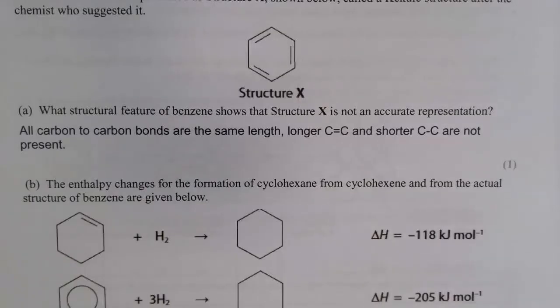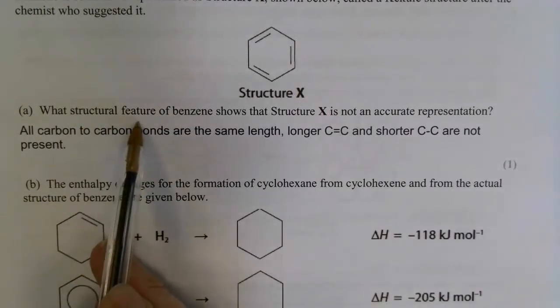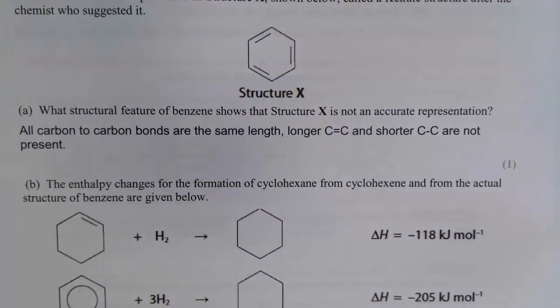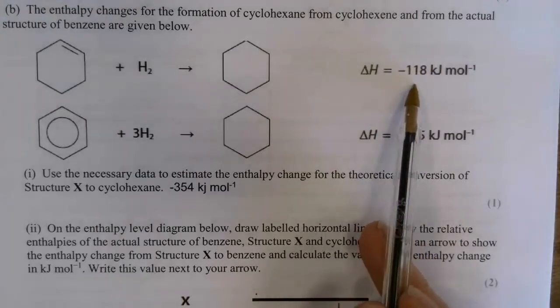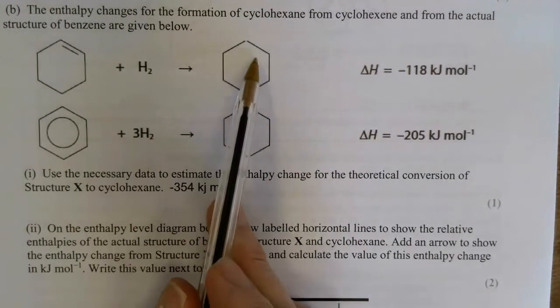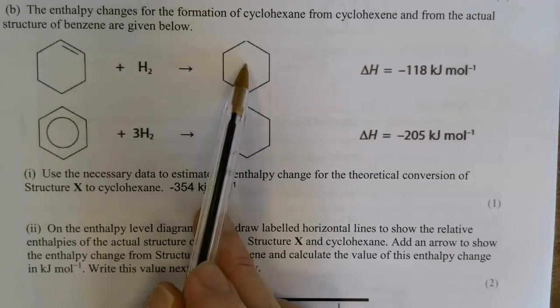The first bit of the question caught a few students out because they misunderstood what was meant by structural feature. The structural feature is showing that it's got alternating single and double bonds. Well we know that's not correct because all the carbon to carbon bonds are the same length, so that's the part of the structure which is not correct. If it releases 118 kilojoules of energy to add hydrogen across one double bond to make it into a single bond, then to turn structure X into cyclohexane, we'd have three times this because you've got three double bonds.